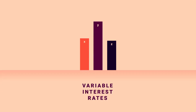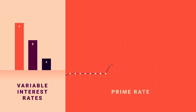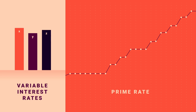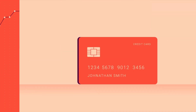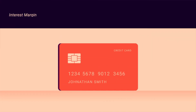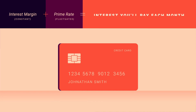Because the prime rate is a benchmark, variable interest rates go up or down in accordance with the prime rate. In fact, the prime rate is the variable part of your interest rate. In other words, the interest you owe on your credit card equals the interest rate margin plus the fluctuating prime rate.